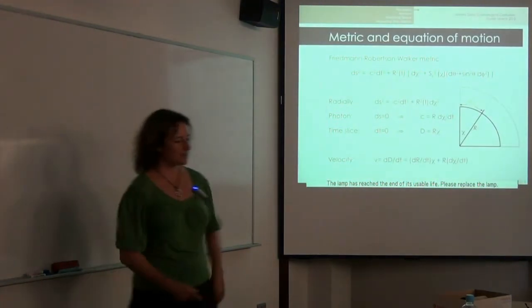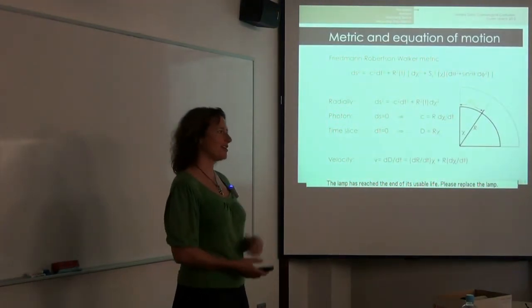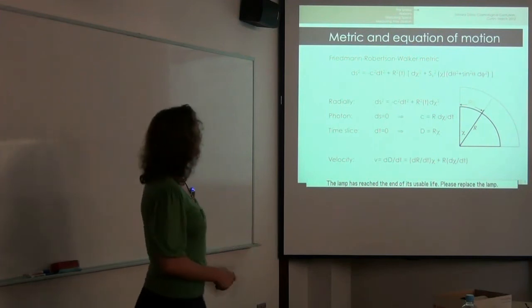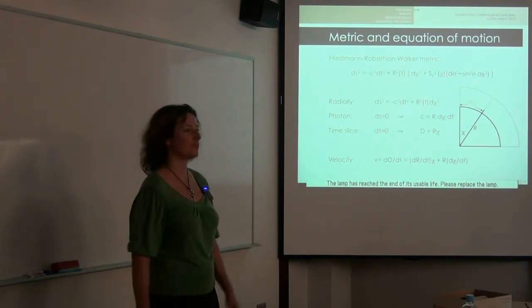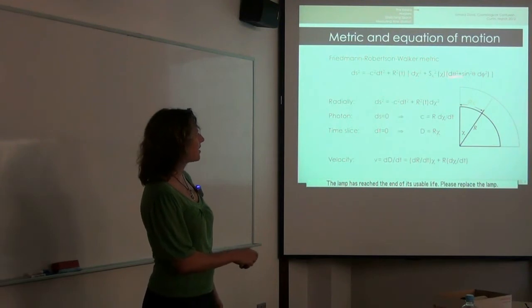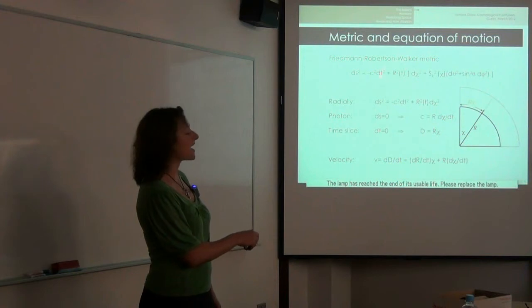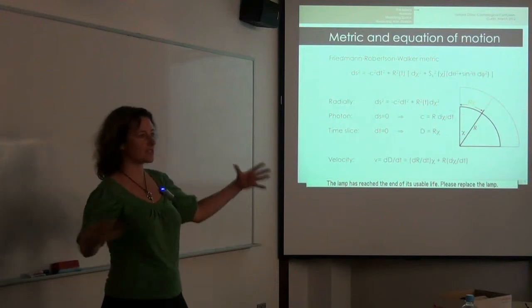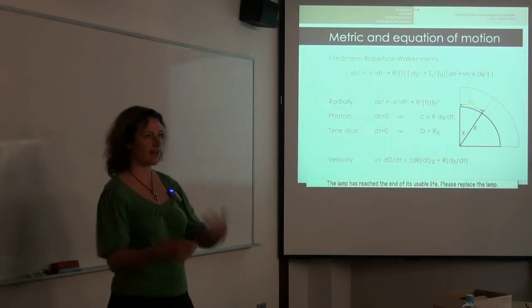Metrics, very basics. When you're talking about homogenous isotropic space, the metric that is most commonly used is Friedman-Robertson-Walker metric. So you've got the line element, you've got time, you've got the spherical coordinates here, spatial coordinates, and a scale factor that lets you expand and contract those coordinates.